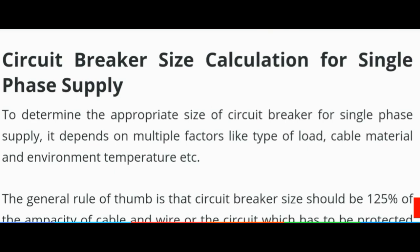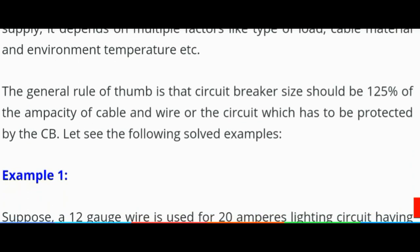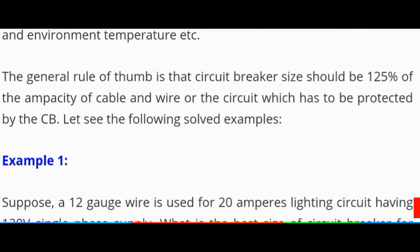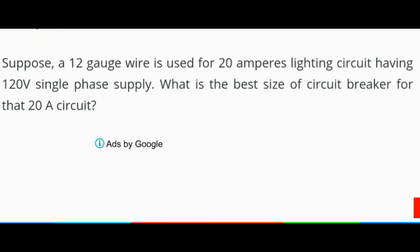The next topic is circuit breaker size calculation for single phase supply. To determine the appropriate size of circuit breaker for single phase supply, it depends on multiple factors like type of loads, cable material, and environment temperature. The general rule of thumb is that the circuit breaker size should be 125 percent of the capacity of the cable and wire of the circuit. Example 1: Suppose a 12 gauge wire is used for a 20 ampere lighting circuit having 120 volt single phase supply. What is the best size of circuit breaker for that 20 ampere circuit?